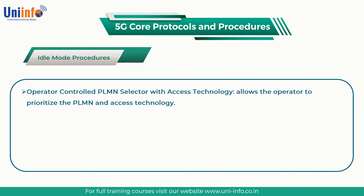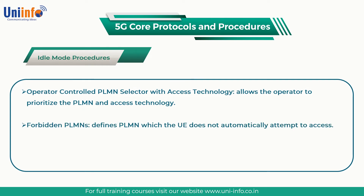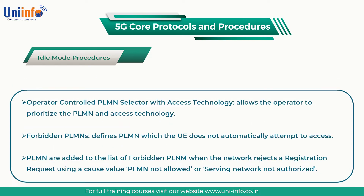4. Operator Controlled PLMN Selector with Access Technology allows the operator to prioritize the PLMN and Access Technology. 5. Forbidden PLMNs defines PLMNs which the UE does not automatically attempt to access. PLMNs are added to the list of forbidden PLMNs when the network rejects a registration request using a cause value of PLMN not allowed or serving network not authorized.